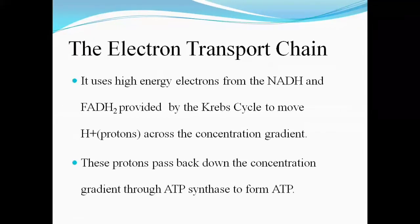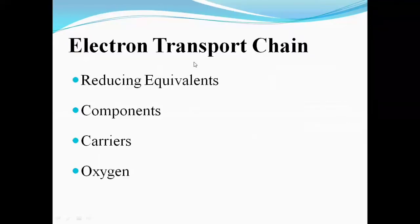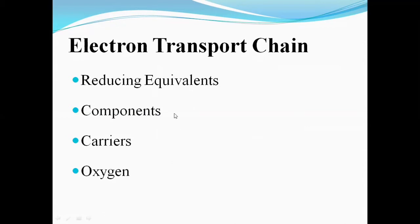The electron transport chain has three main components: enzymes that transfer the electrons, coenzymes that transport electrons from different oxidation processes such as oxidation of carbohydrates, proteins, and lipids, and carriers that transport electrons between the enzyme complexes. Electrons are taken up by reducing equivalents like NADH and FADH2 and then transported through the enzymes. The final acceptor of electrons in the electron transport chain is oxygen.